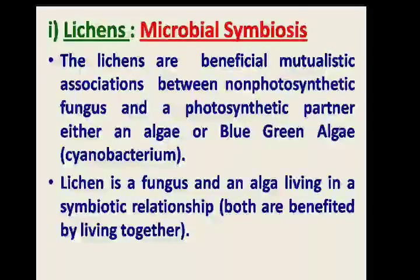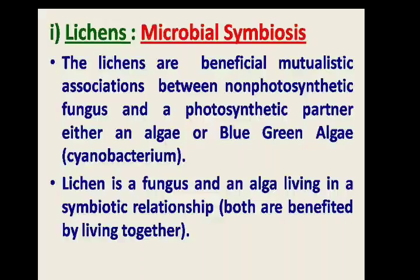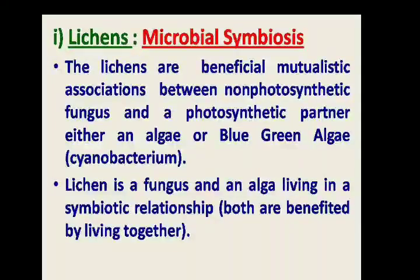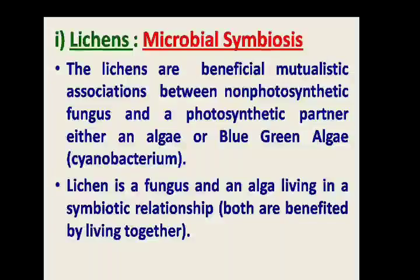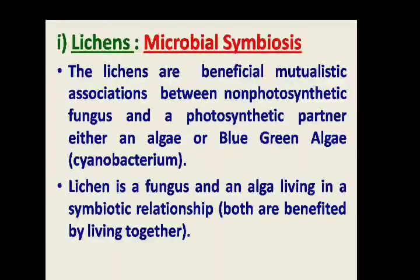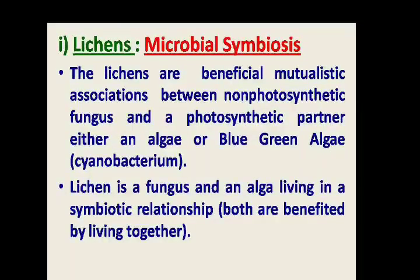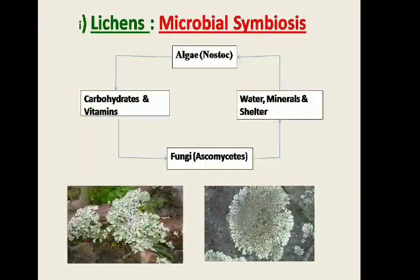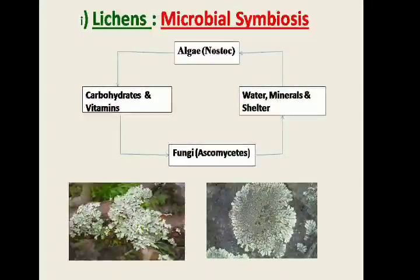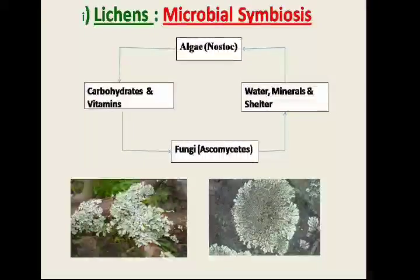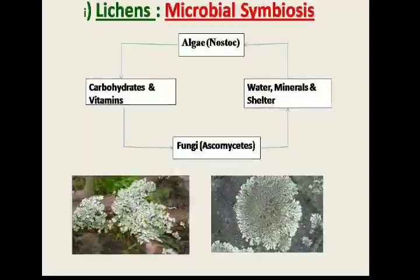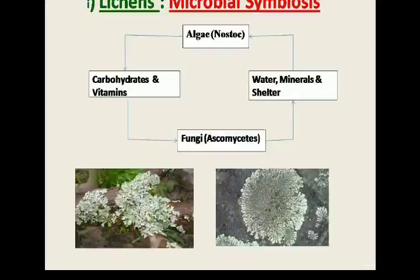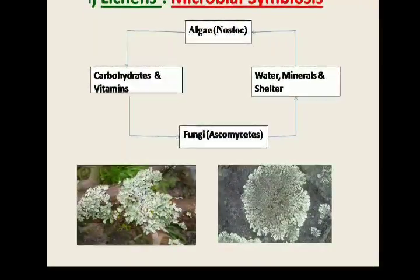Lichen is the best example of Microbial Symbiosis. Lichen is a beneficial microbial association between a non-photosynthetic fungus and a photosynthetic partner, either an algae or blue-green algae such as cyanobacteria — a fungus and alga living in a symbiotic relationship. Algae produce carbohydrates and vitamins utilized by the fungi, while fungi provide water, minerals, and shelter to the algae. Both partners live together and benefit each other.